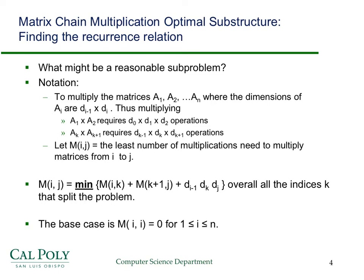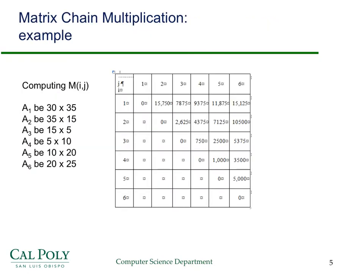You'll see that in the example we're going to work through. The base case is one matrix, and that requires zero multiplications. So here's the setup. These are along the diagonal — we have individual, single matrices. From 1 to 1, 2 to 2, 3 to 3 — that requires no multiplications.